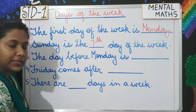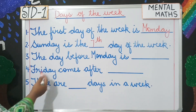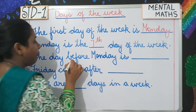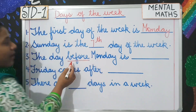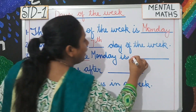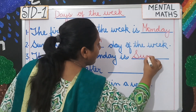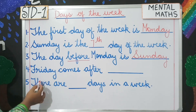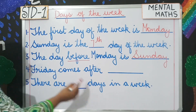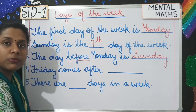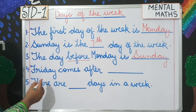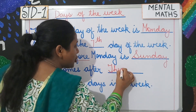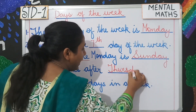You can even write the spelling of seventh. Both answers are correct. Number three: the day before Monday is? What comes before Monday? You have to write before Monday — it will be Sunday. Next question: Friday comes after which day students? It comes after Thursday. So you will write Thursday — T-H-U-R-S-D-A-Y.